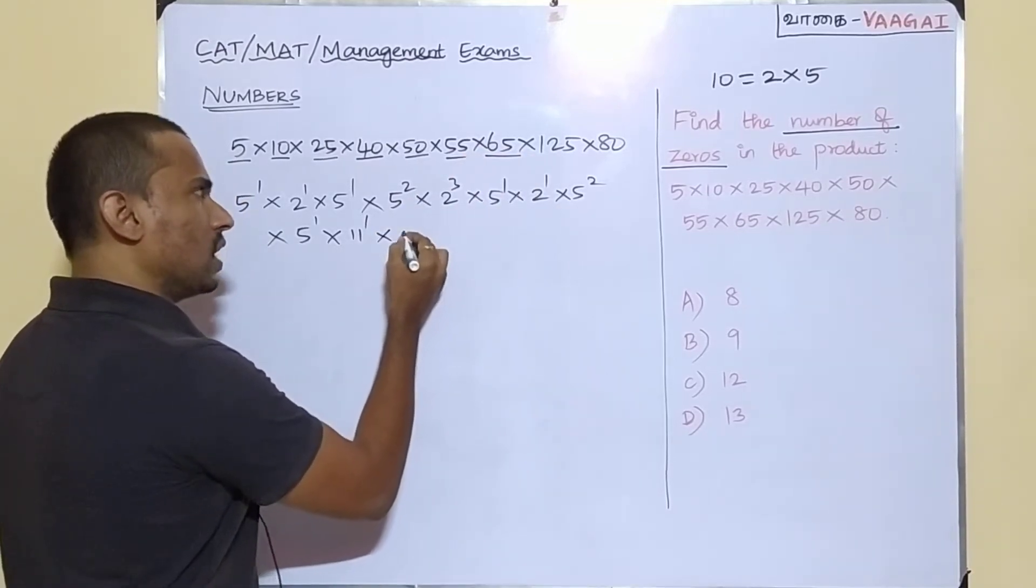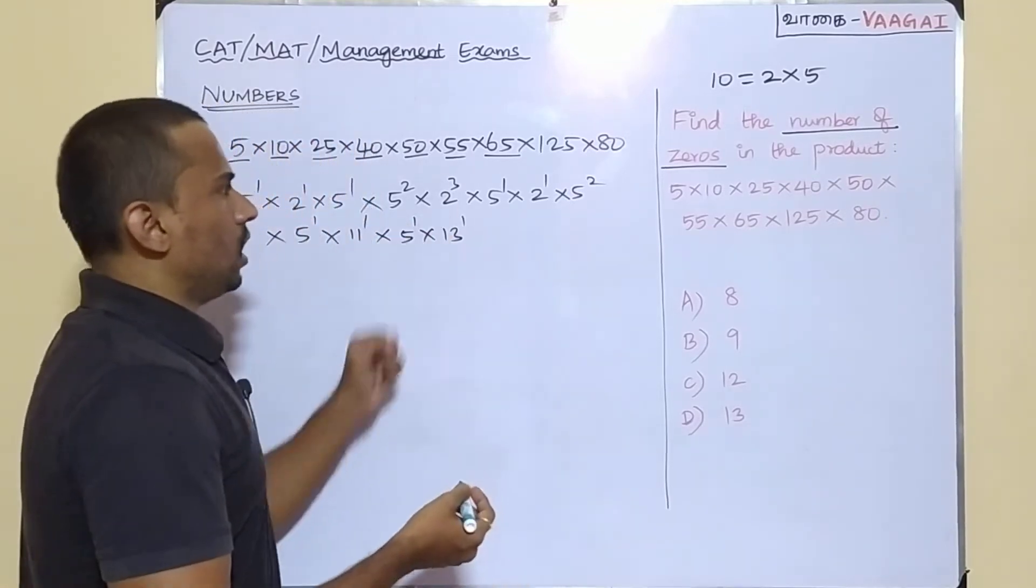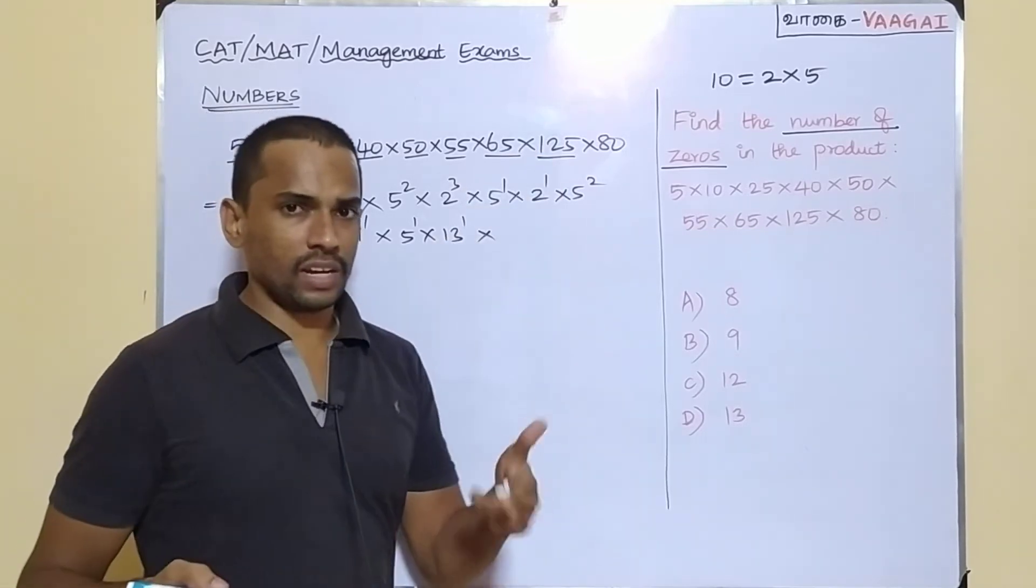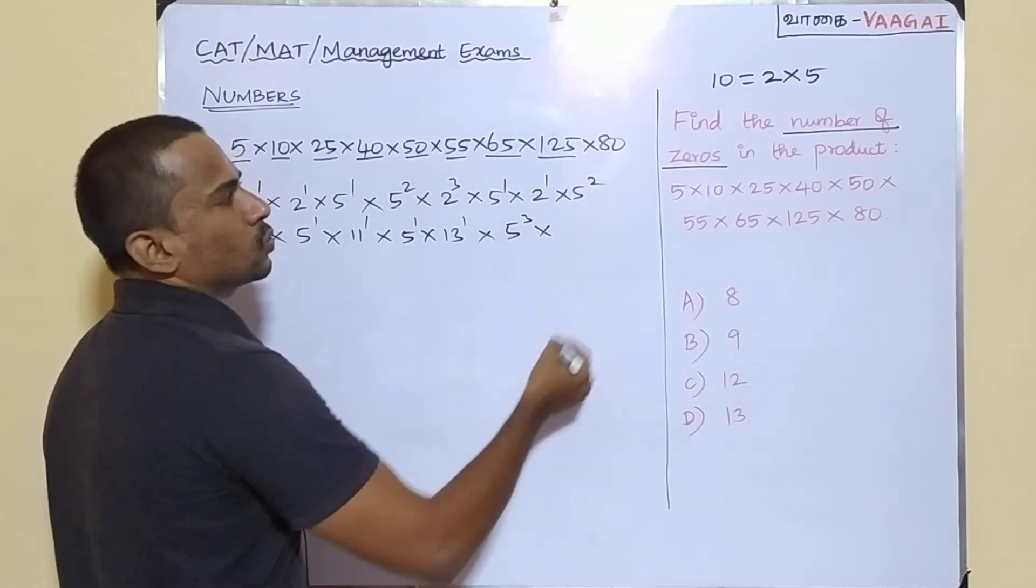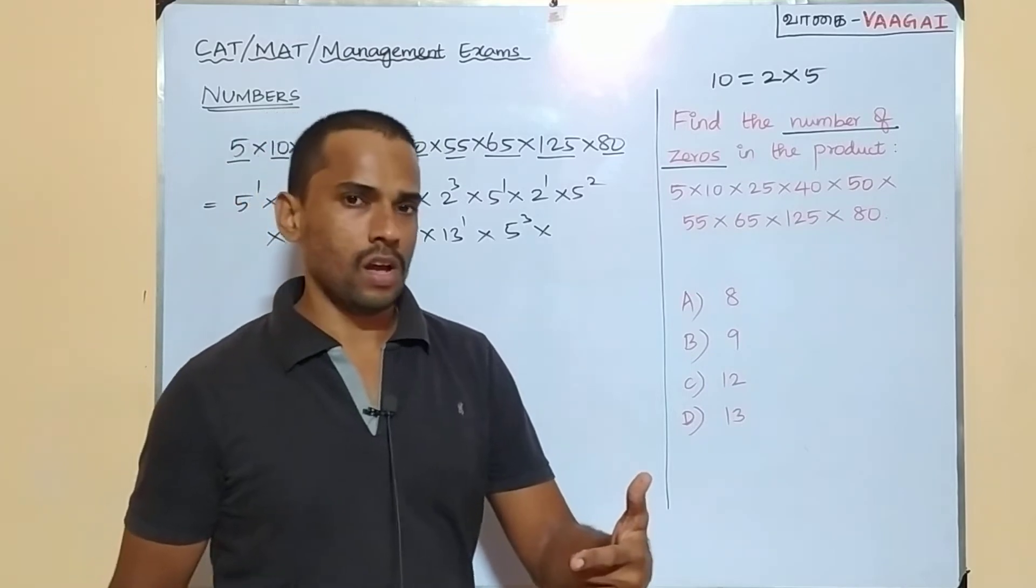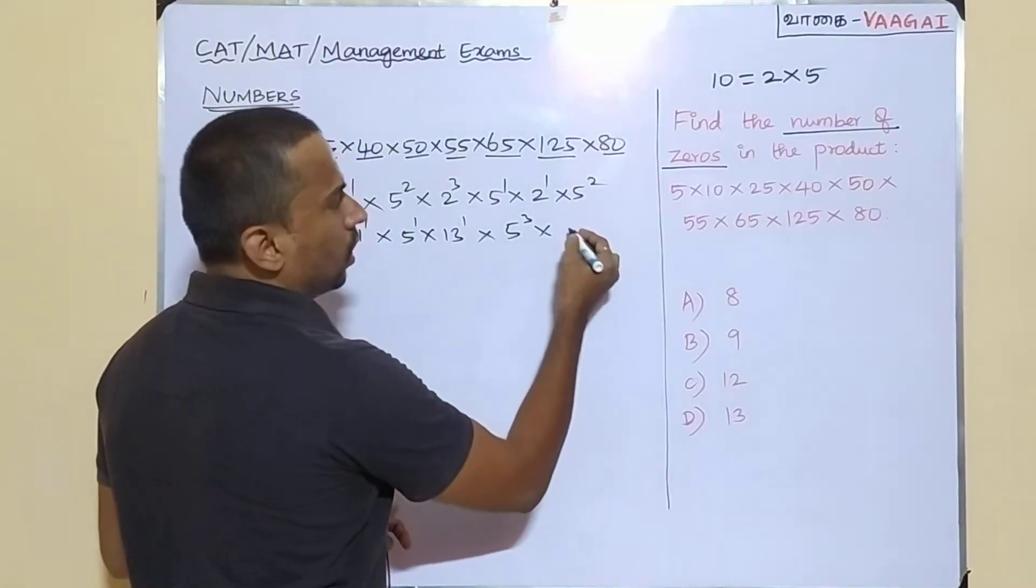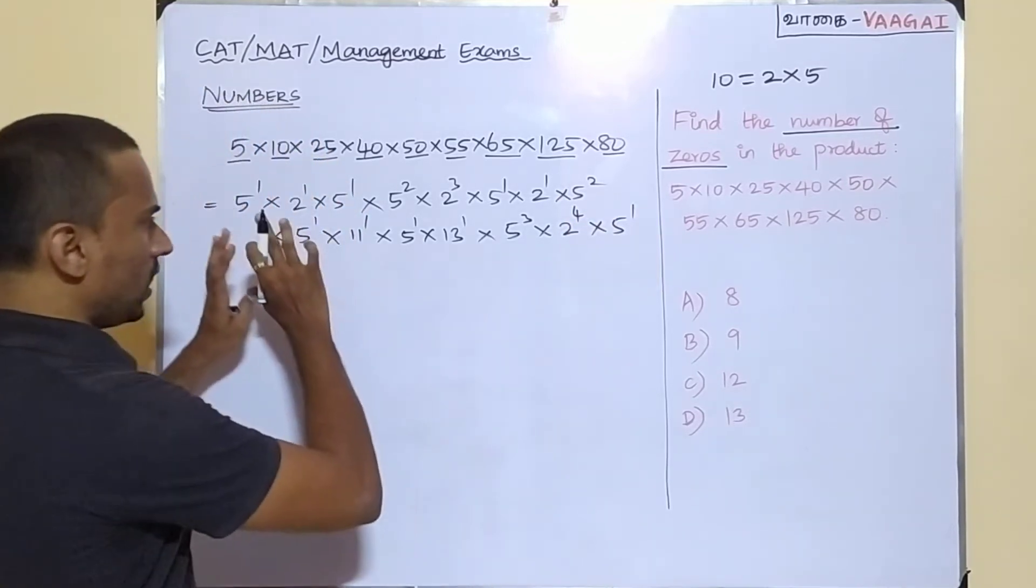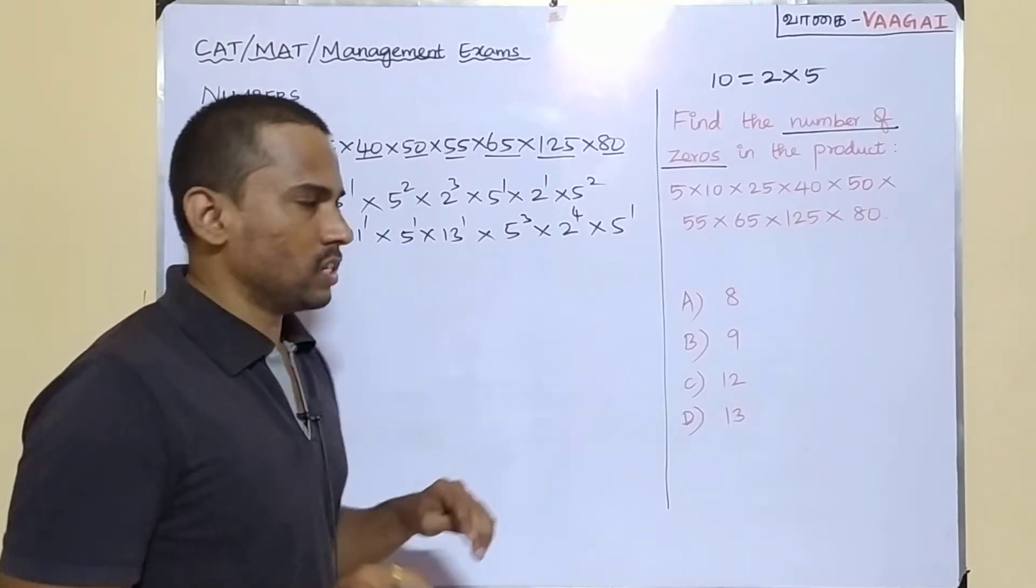Next we have 65. This 65 is nothing but 5 power 1 into 13 power 1, because 65 is nothing but 5 times 13. Continuing it, next we have 125, which is exactly 5 power 3. And last one we have 80. This 80 is nothing but 16 times 5, so 16 can be written as 2 power 4 multiplied by 5 power 1. So now clearly we have decomposed these numbers in terms of powers of prime numbers.